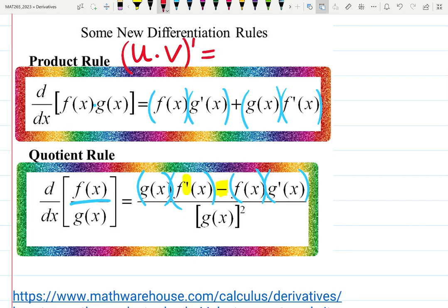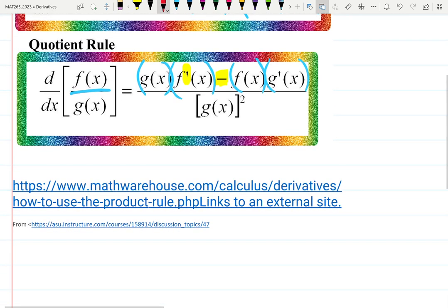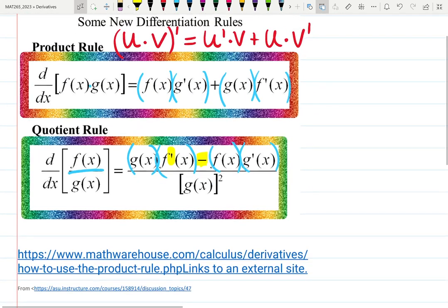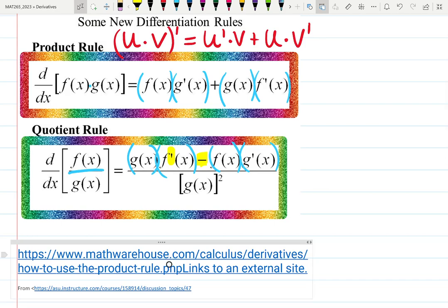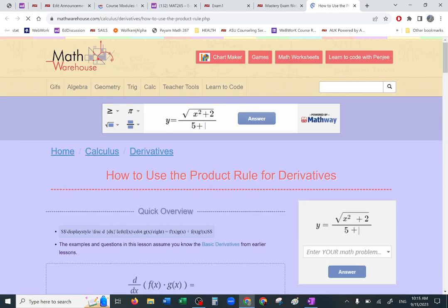U times V prime gives you: derivative, not-derivative, plus not-derivative, derivative — in any order you like. That's a faster way to remember the formula. Let's watch the cute animation I have for quotient rule and product rule. It looks like this — I posted it in the announcement.